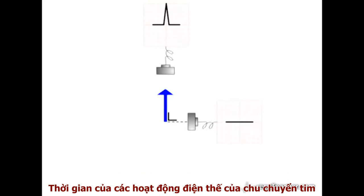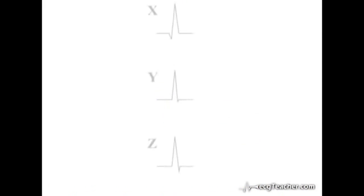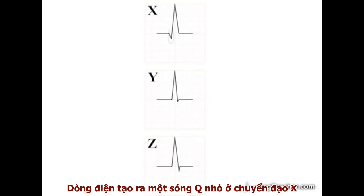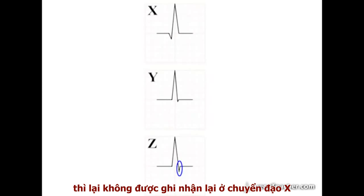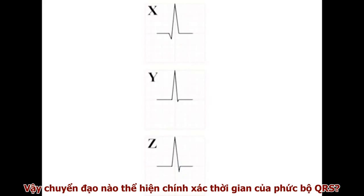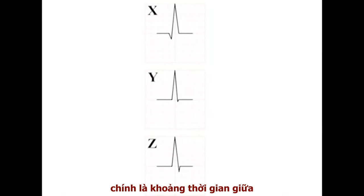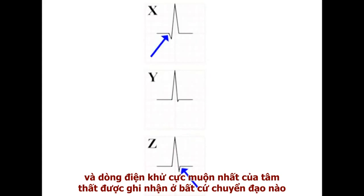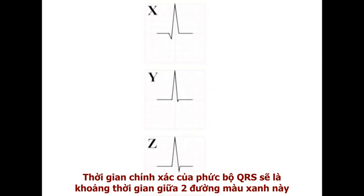For this and many other reasons, the duration of the major events of the cardiac cycle appears to vary between ECG leads. In a stylised example with three model leads, the current generating a small physiological Q wave in lead X has not been detected by lead Y, while the current generating a small S wave in lead Z has not been detected by lead X. The true QRS duration is represented by the difference in time between the earliest and latest ventricular depolarising current detected in any lead.